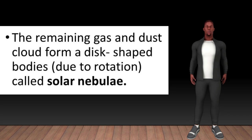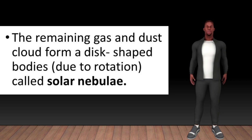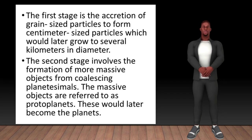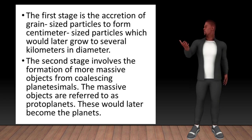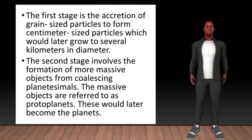When the temperature is sufficient enough, a nuclear reaction begins at the core of the protostar and later becomes the sun. The remaining gas and dust cloud form disk-shaped bodies due to rotation called solar nebulae. According to the Solar Nebular Theory, the formation of the planets involves different stages in contrast to the single process of the nebular theory. The first stage is the accretion of grain-sized particles to form centimeter-sized particles which would later grow to several kilometers in diameter. The second stage involves the formation of more massive objects from coalescing planetesimals. The massive objects are referred to as protoplanets. These would later become the planets.